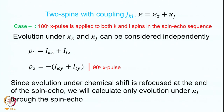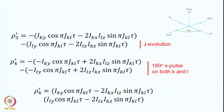Now let us consider the situation when we have coupling as well. The total Hamiltonian will be HZ + HJ — the chemical shift Hamiltonian plus the coupling Hamiltonian. Case 1: the 180x pulse is applied to both K and L spins in the spin echo sequence. Evolution under HZ and HJ can be considered independently. Since chemical shift evolution is already shown to be refocused at the end of the spin echo, we will calculate only the evolution under HJ.